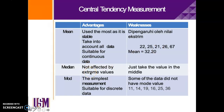For median, the advantage is that it is not affected by extreme values. The weakness is that it only takes the value in the middle — median is obtained by arranging values from smallest to largest and finding the middle score. For mode, the advantage is that it is the simplest measurement and suitable for discrete data. The weakness is that some data sets do not have a mode value, for example: 11, 14, 19, 16, 25, and 36. In statistical reasoning in education, we usually take the mean as the central tendency measurement because it has the most advantages.